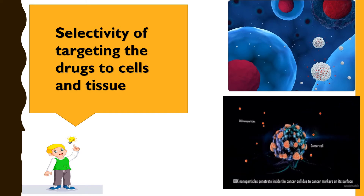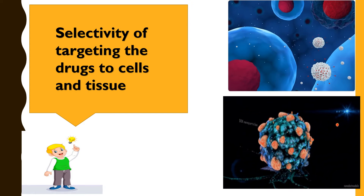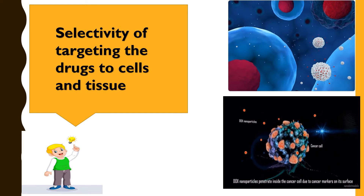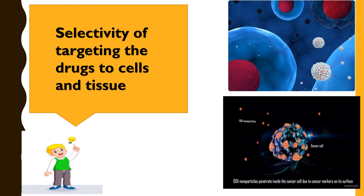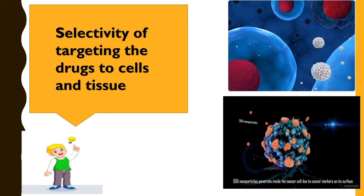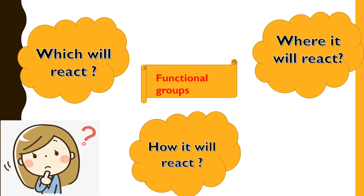Moving towards the topic — selectivity in organic reactions is an increasingly important part of any organic synthesis. The whole process of organic chemistry, and especially organic synthesis, depends upon the selectivity that can be achieved in the organic reaction. The problem of selectivity comes when an organic molecule has more than one functional group. Three questions come to mind: which functional group will react, where it will react, and how it will react. The answer to all three questions is given by selectivity.